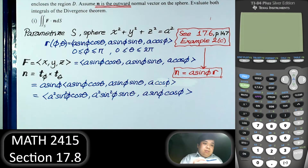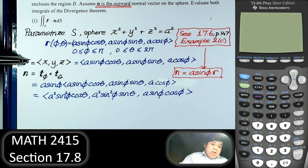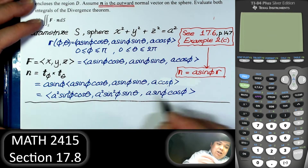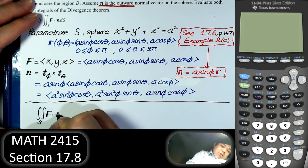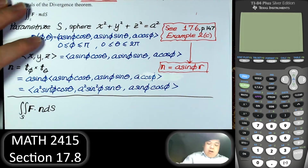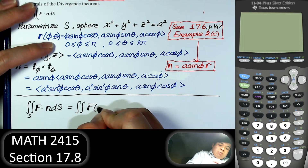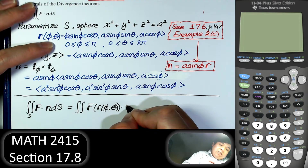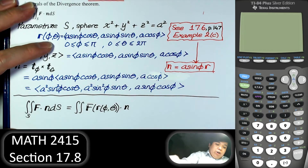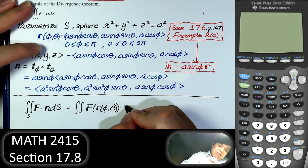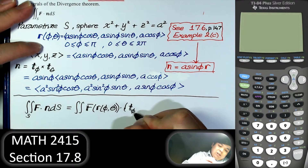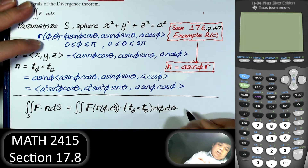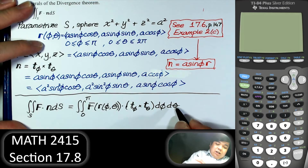Now we have everything: the parameterization, the vector field in terms of parameters, and the normal vector in terms of parameters. All we need to do is take the dot product. The flux equals the double integral — we integrate the dot product of F and n over φ from 0 to π and θ from 0 to 2π.